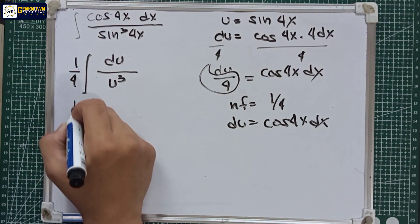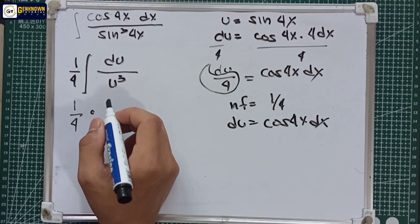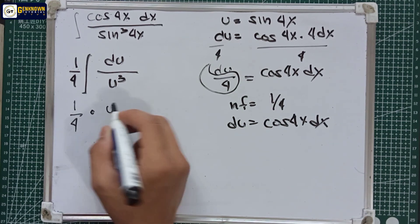Integrating, we have one-fourth multiplied by u raised to negative 3 du, which gives u raised to negative 2.